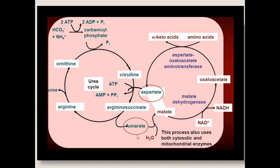Through fumarate and aspartate, these two cycles are linked because of these intermediate products. During the urea cycle, through the metabolism of amino acids, harmful substances like ammonia are converted and eliminated from the body through a series of reactions, forming the harmless substance urea. During this process, arginosuccinate is broken down into fumarate and arginine — so fumarate is an intermediate product released from the urea cycle.